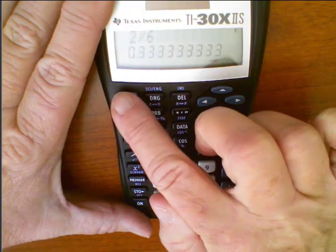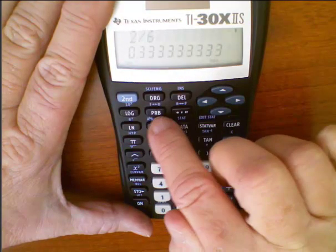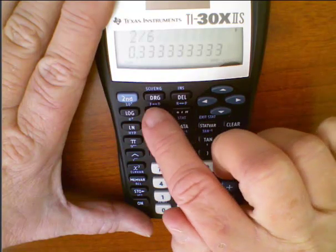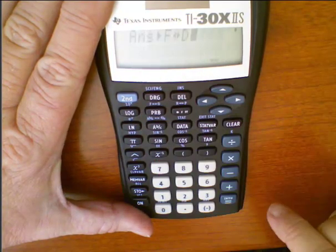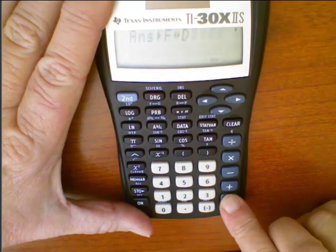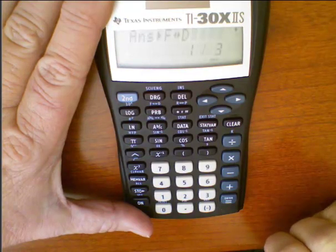So to get a repeating decimal back into a fraction, you're going to go the same route. So second and our PRB button, up above it is the function we're doing by hitting that second. And then enter. And it gives us back one-third.